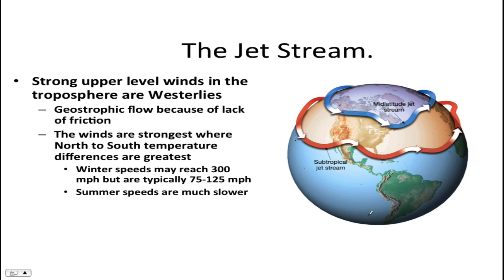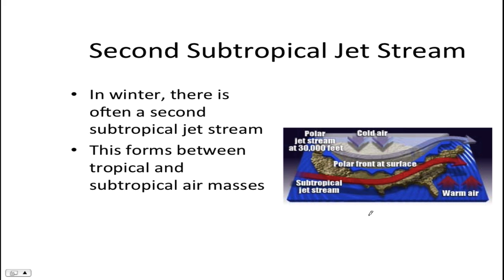Keeping this in mind, you should guess that the jet stream travels fastest during the winter months and slower during the summer months. There's also a second subtropical jet stream, and this usually occurs in wintertime. It forms between the tropical and subtropical air masses.